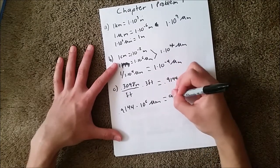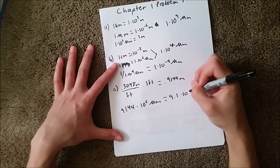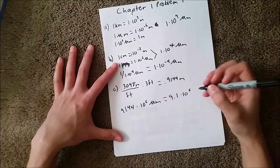So, when we multiply those together, we get 9.1×10⁵ micrometers.